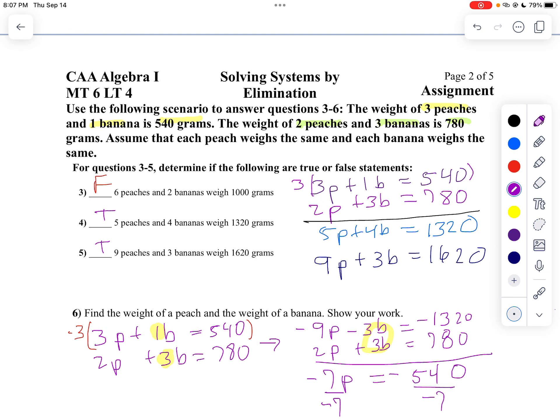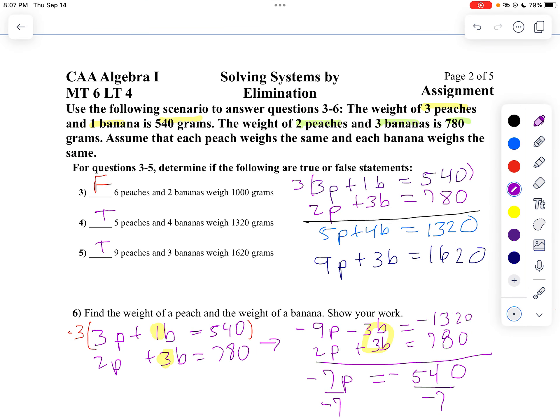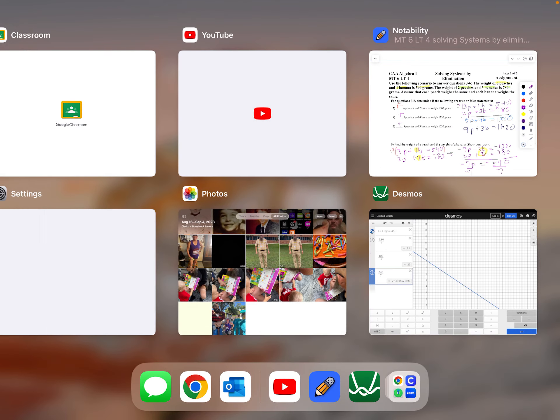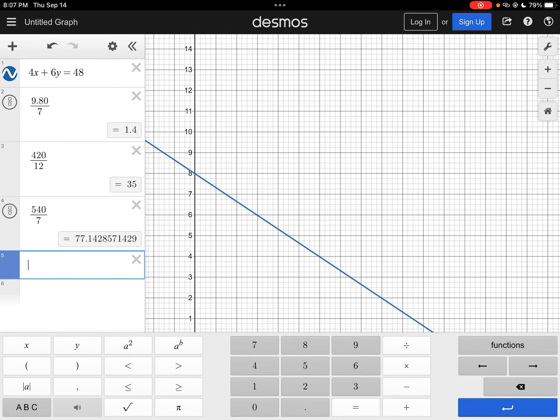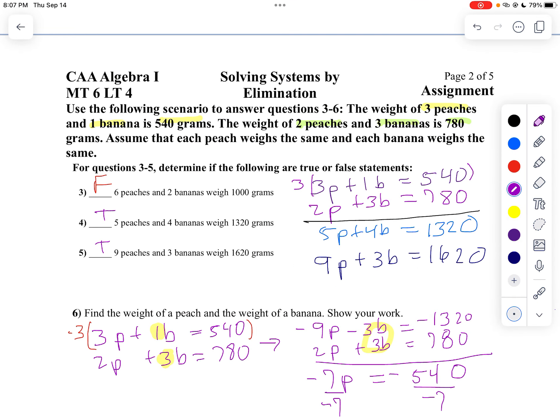So I'm going to take negative 540 divided by negative 7. I think I'll use my calculator for that. I'll just type in 540 divided by 7 because I know my answer is going to be positive. And I get about 77.1. I want to make sure I did that subtraction right. So negative 1320 plus 780 is negative 540. What did I do wrong? Negative 9 plus 2, yeah, that's negative 7. I'm not getting the correct answer here. Negative 3 times 540. Well, I did that right. Oh, negative 1620. There we go.